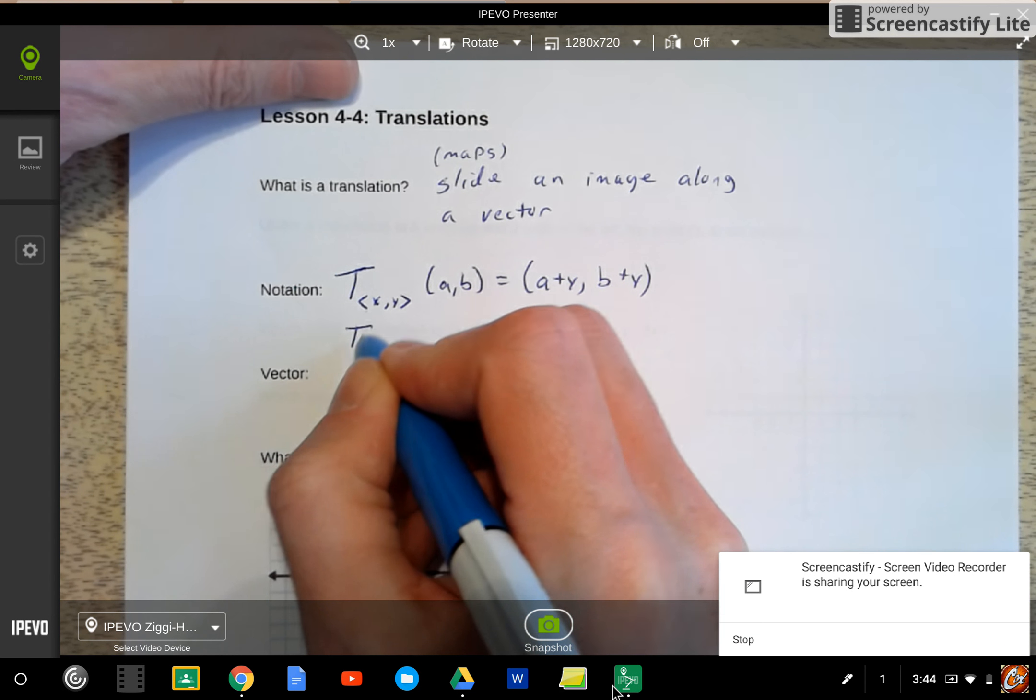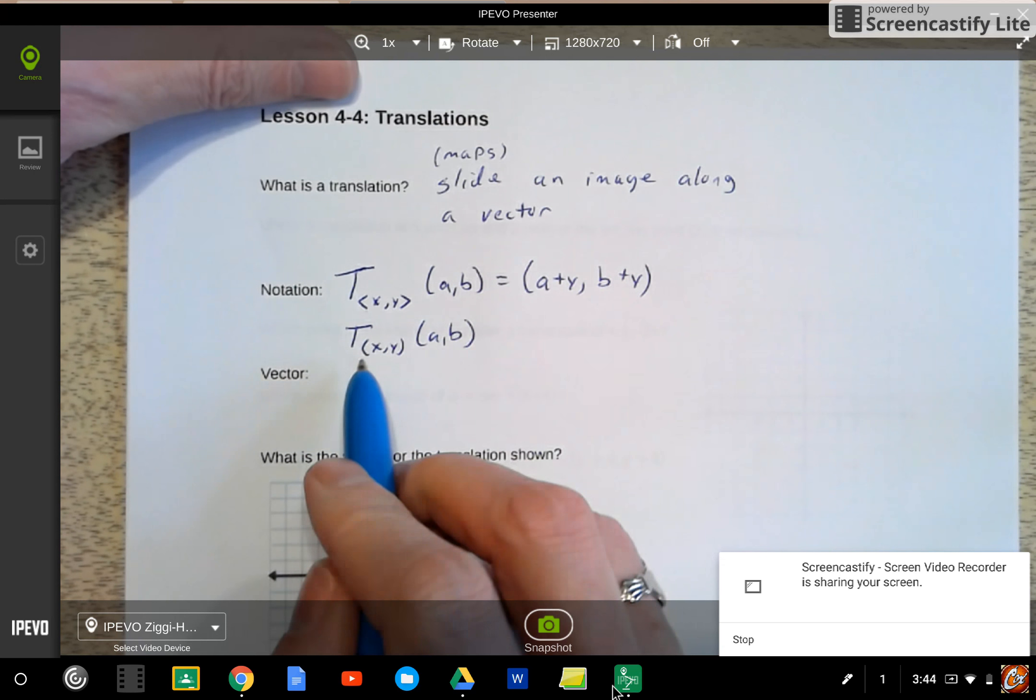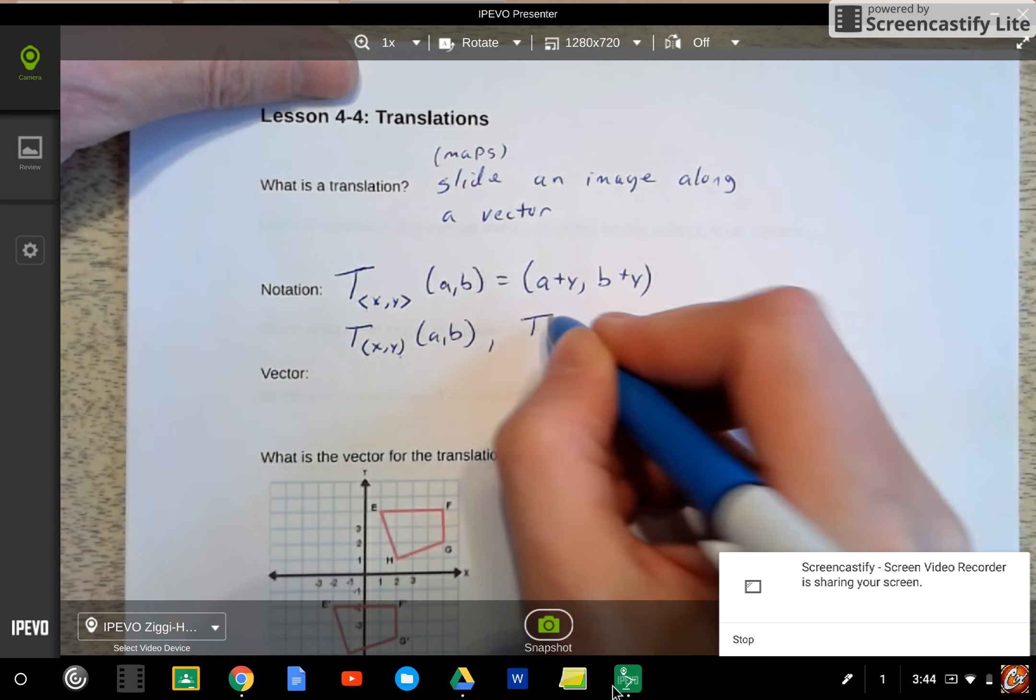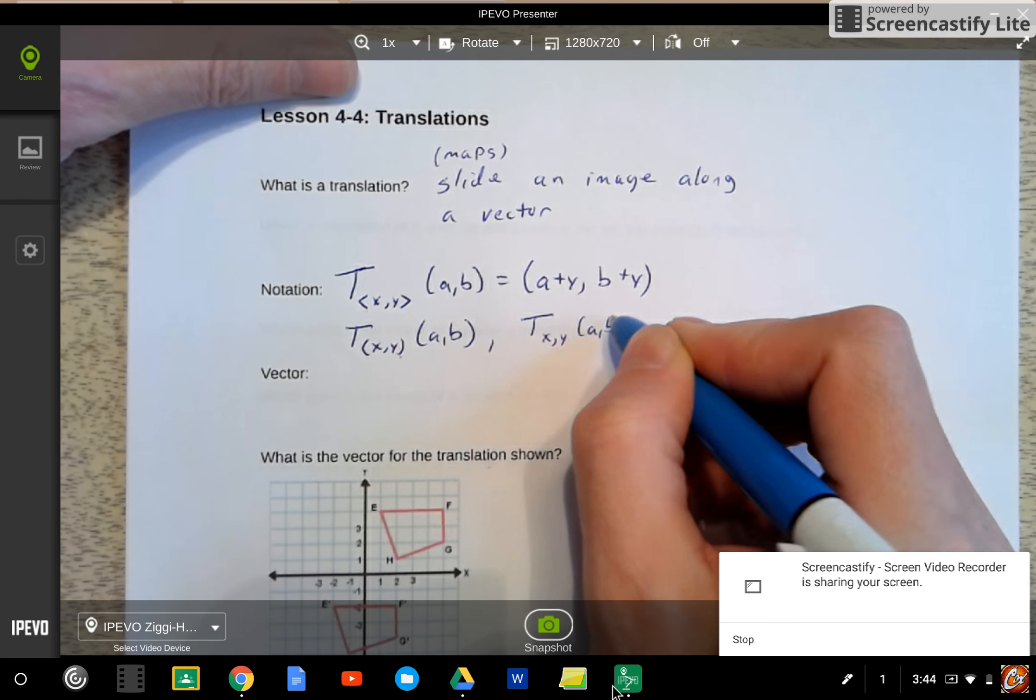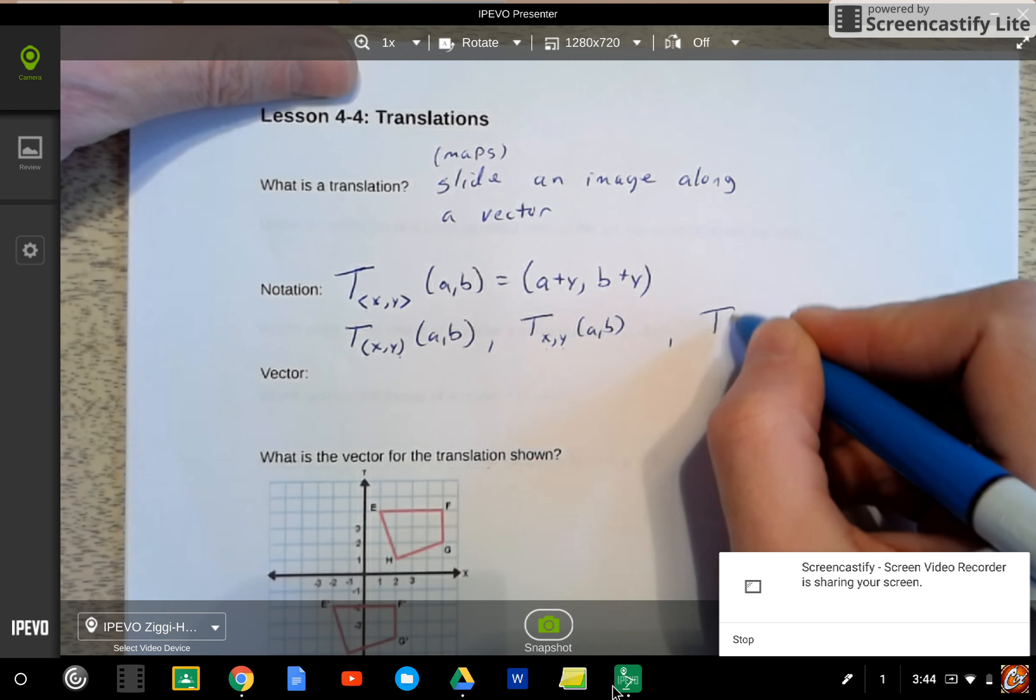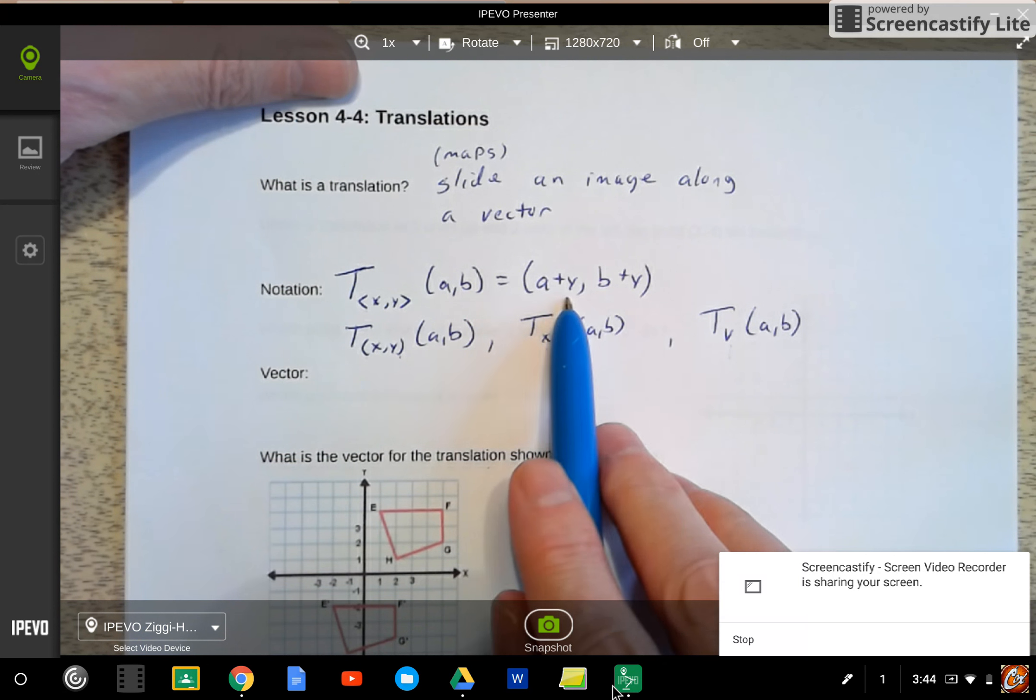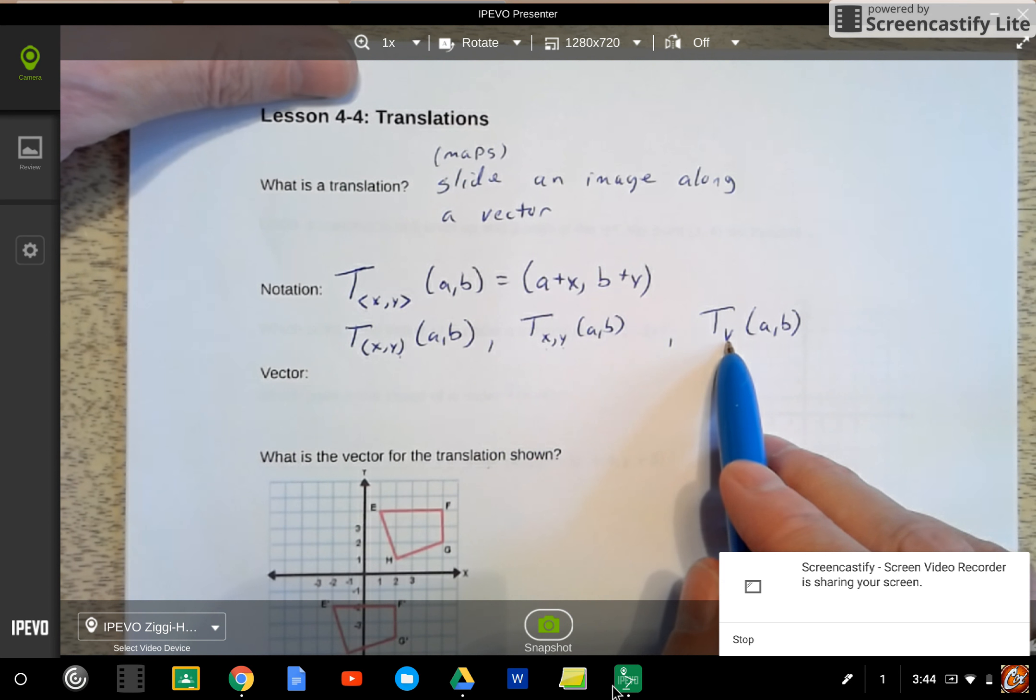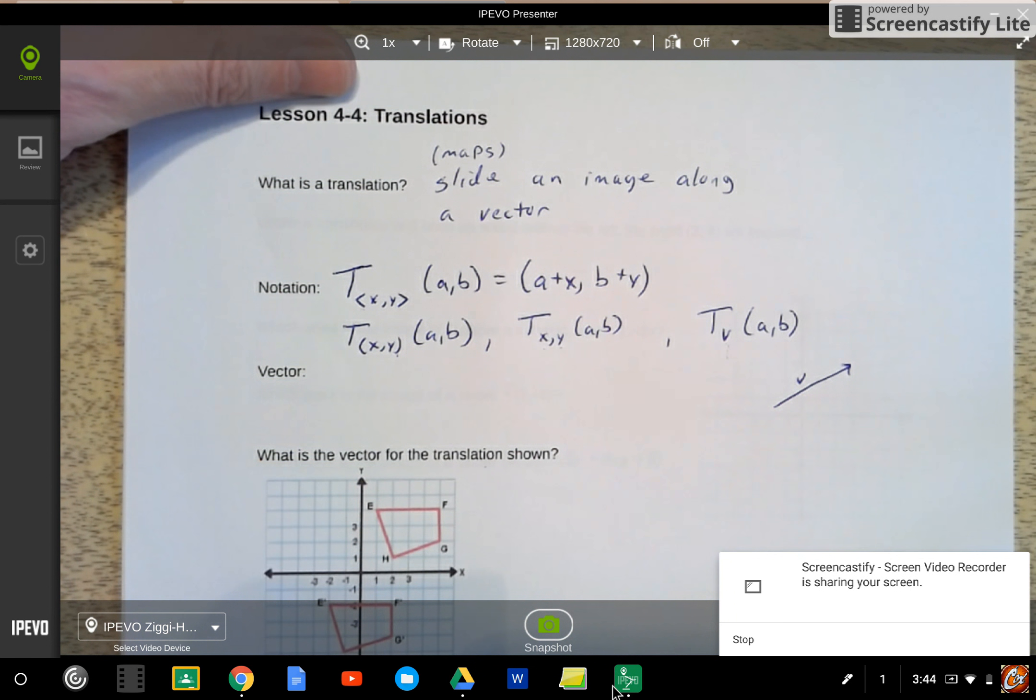And they can write this a couple different ways. They could write it with that type of symbol. They could write it like this using a different symbol, using regular parentheses. I've even seen them write it with nothing there. I have seen them write it as vector V. And when they write it that way, we can't really do the addition here of X and Y. When we do a vector V, we actually have to have a picture of what vector V might look like.